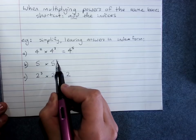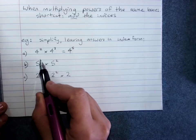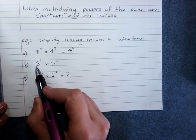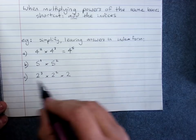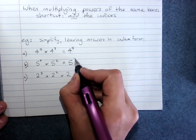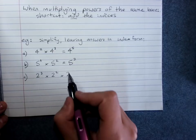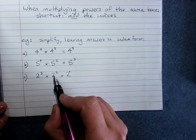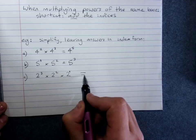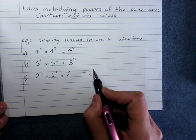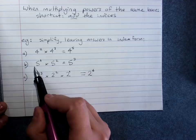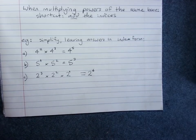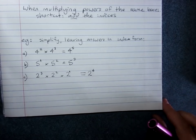Now, this is 5 times 5 squared. It seems tricky because there's no power on the first 5. But any time there's no power written, it's just a 1, because 5 on its own is just 1 lot of 5. So this is 5 to the power of 3. And here's a tricky one — there's another power of 1 there, don't miss it. 2 cubed times 2 squared times 2 to the power of 1: add all of those, giving 2 to the power of 6. This only works when it's the same base number, not when it's a different base number. So that's index law 1.